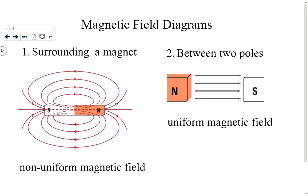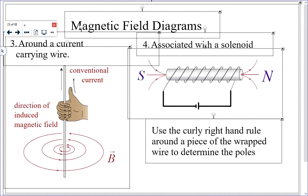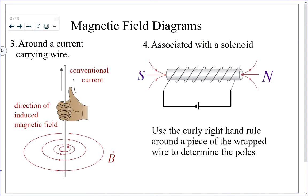We then got into the right-hand rule, so you also need to know how to determine the direction of the magnetic field surrounding a current-carrying conductor. That's also on the handout. Your thumb of your right hand points in the direction of conventional current, and your fingers curl in the direction of the magnetic field. You also have to be able to determine the magnetic field direction and the poles associated with a solenoid — that's just applying this curly right-hand rule.